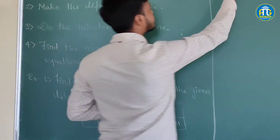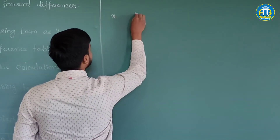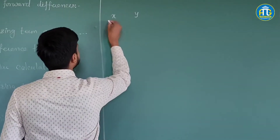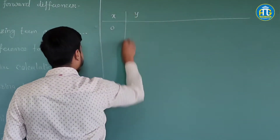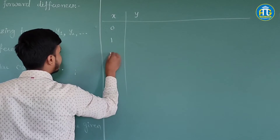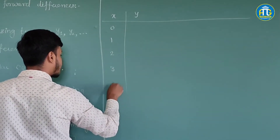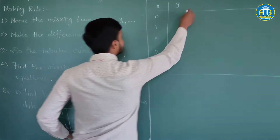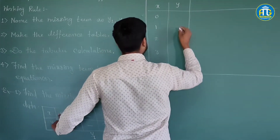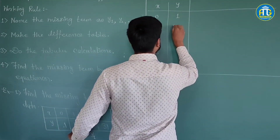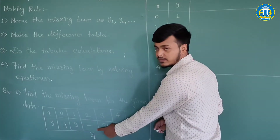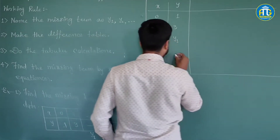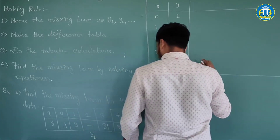We have already named the missing term as y1, so now let us make the difference table. The table will have a column for values of x and y. The x values are 0, 1, 2, 3, and 4. For x=0 we have y=1; for x=1 we have y=3; for x=2 we have the missing value y1; then we have 31; and the last value is 81.